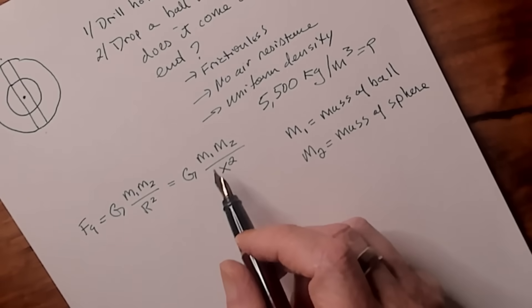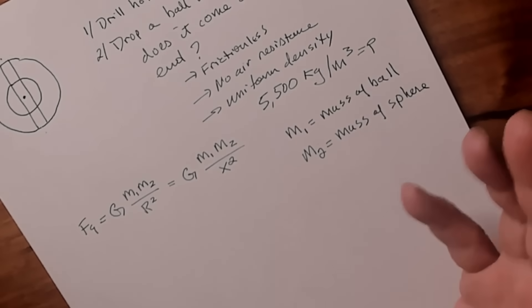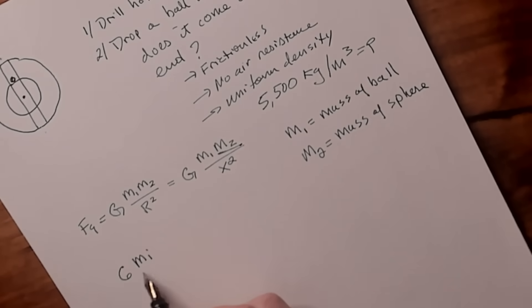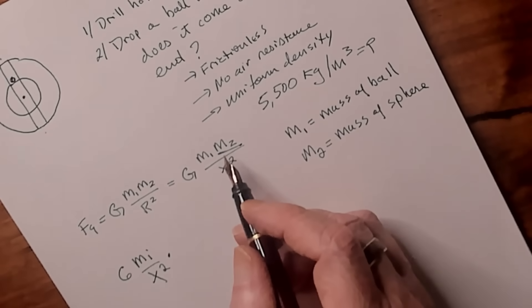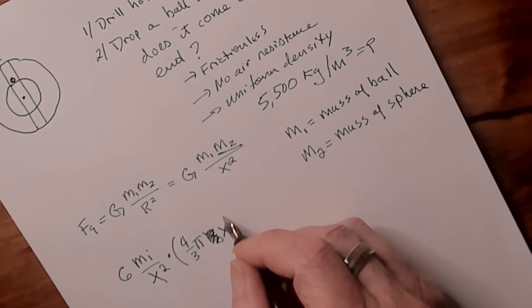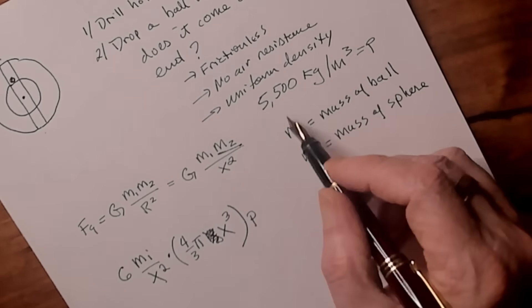This is a good time to talk about these masses. Mass 1 is the mass of the ball; mass 2 is the mass of the sphere of radius x. The mass of the Earth at radius x is 4 over 3 pi times x cubed times the density of Earth. This makes sense because density is mass divided by volume, and the volume of a sphere is 4 over 3 pi r cubed. So multiplying volume by density gives us the total mass.